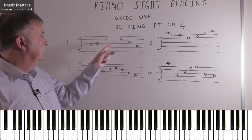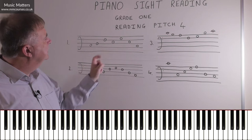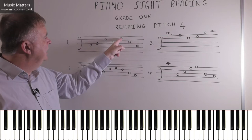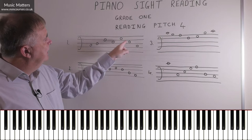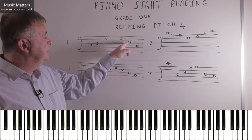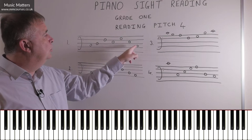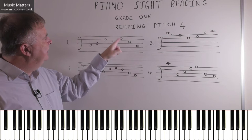Stepping down from F, going down one must be E. E is in a space - 'all cows eat' confirms it. Skipping up from E, missing F, we go to G - 'all cows eat grass', so it's G. A skip down to E - we've just been there, 'all cows eat'. Another skip down to C - we're coming back to the note where we began, 'all cows'. So the notes are: C, D, F, E, G, E, C.